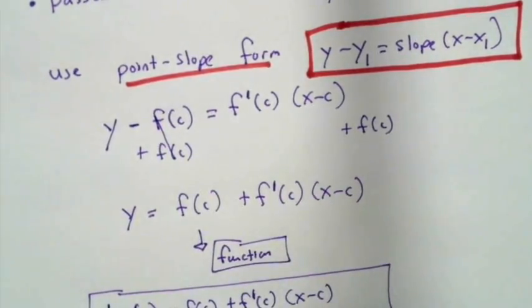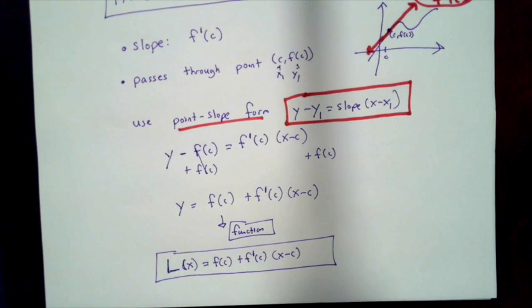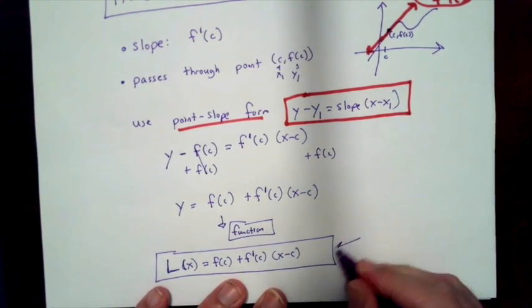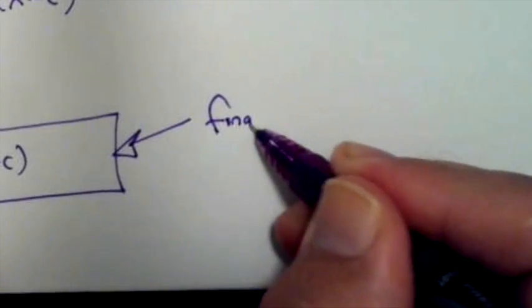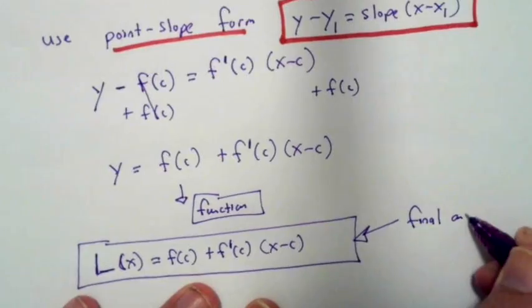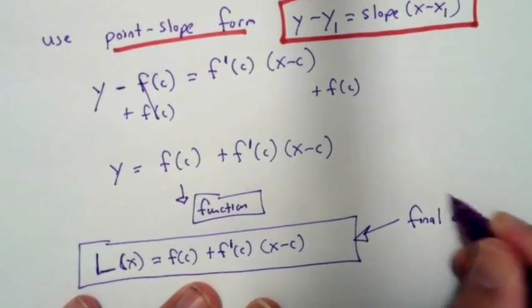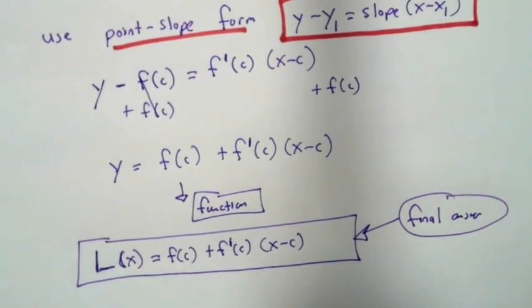Then we can cancel the f of c by adding it to both sides, which gives us y is equal to f of c plus f prime of c times x minus c. Now the only thing left to do is to rewrite this in a function form to get a final answer, so that we have l of x is equal to f of c plus f prime of c times x minus c.